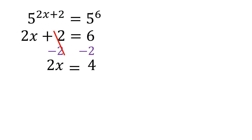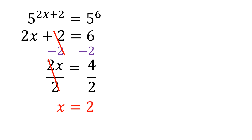Since we still have 2 at the side of x, we're going to divide both sides by 2 to cancel that. What's left is only x. On the other side, 4 divided by 2 is 2. So to make the two sides equal, x should be equal to 2.